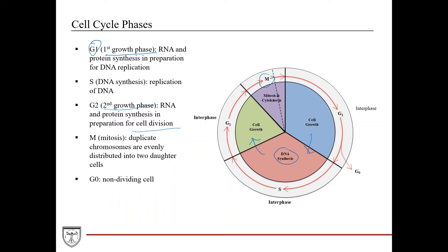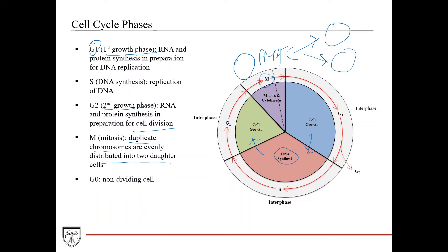During mitosis you have duplicate chromosomes—because you replicated them in the S phase—that are evenly distributed into two daughter cells. You start with one cell, go through all the phases of PMAT and then cytokinesis: prophase, metaphase, anaphase, telophase, and cytokinesis. You end up with two identical daughter cells.